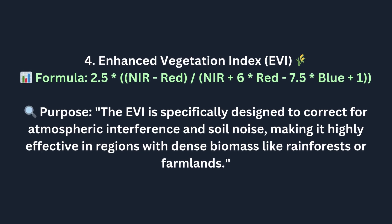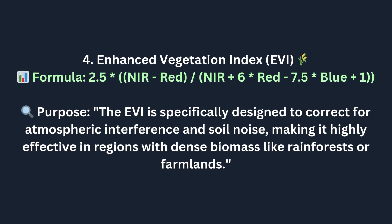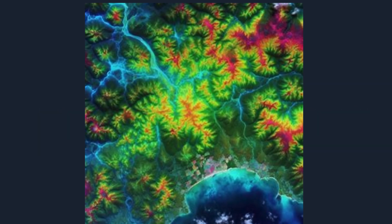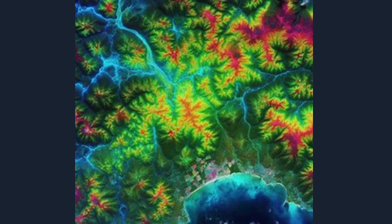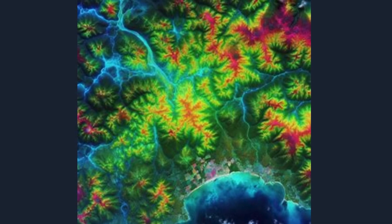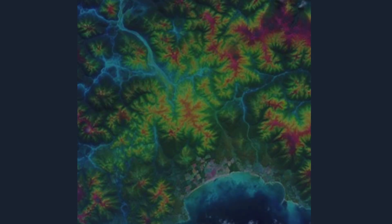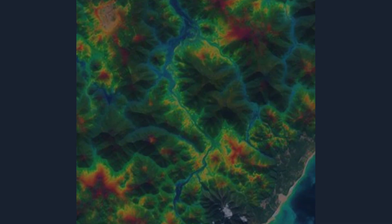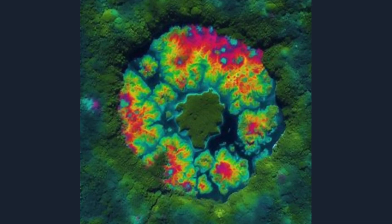When dealing with dense vegetation or forest canopies, the Enhanced Vegetation Index, or EVI, is your best friend. The formula is: EVI = 2.5 × (NIR − Red) / (NIR + 6 × Red − 7.5 × Blue + 1). EVI is specifically designed to correct for atmospheric interference and soil noise, making it highly effective in regions with dense biomass like rainforests or farmlands. It improves on NDVI by addressing atmospheric conditions and canopy reflectance, especially in tropical regions where standard NDVI may saturate, providing more accurate readings of dense forest and cropland.